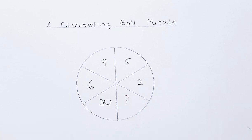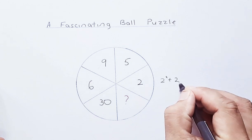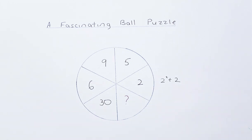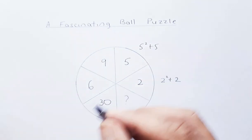So we look at 2 and 6. To get from 2 to 6, you take 2 squared plus 2. So 2 squared is 4, 4 plus 2 will give you 6. For 5 and 30, it's the same thing. You take 5 squared plus 5. So 5 squared is 25, 25 plus 5 will give you 30.